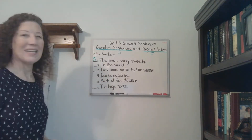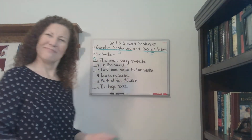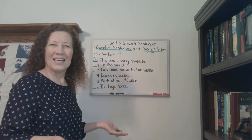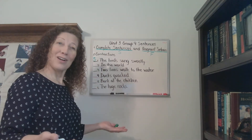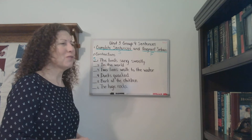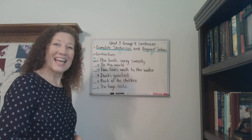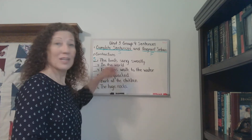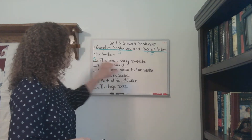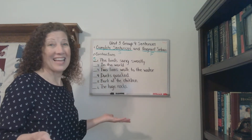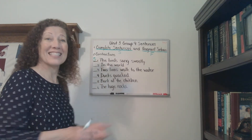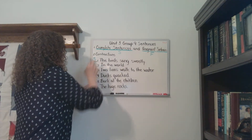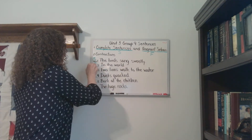Let's look at the second one: In the world. Hmm, in the world? If I walk up to you and say in the world, you want to say in the world what? That's not a complete idea. It does have a subject but there's no verb. It has a capital letter and an end mark, but that doesn't mean that it's a sentence. So we're going to have to call this one a fragment, marked with an F.